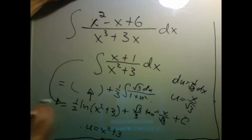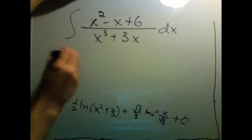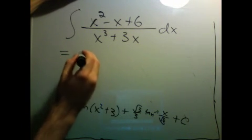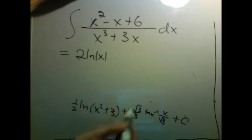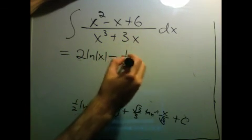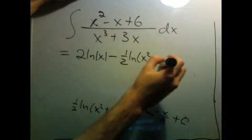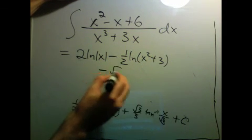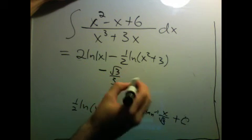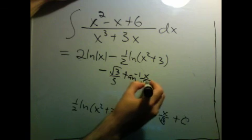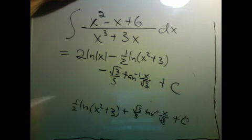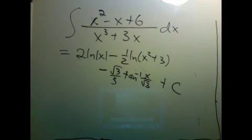So that gives us this integral. We'll call what we had before. We had 2 natural log x. And then the rest was negative. And that's the answer.